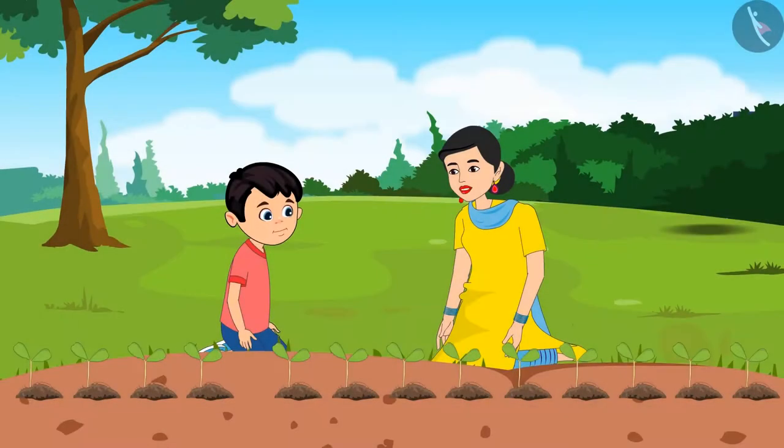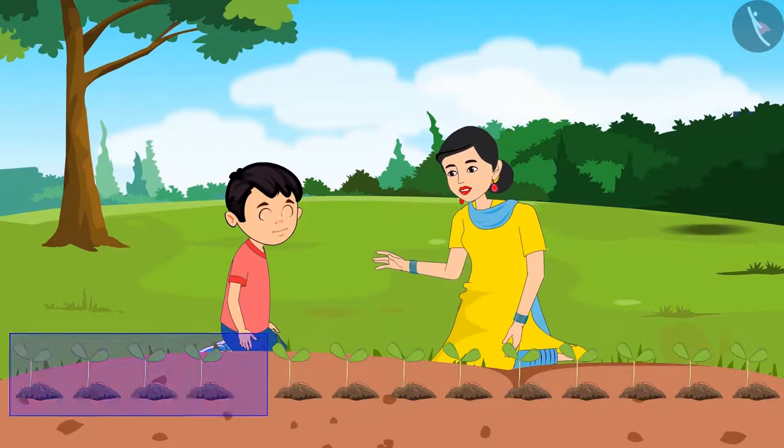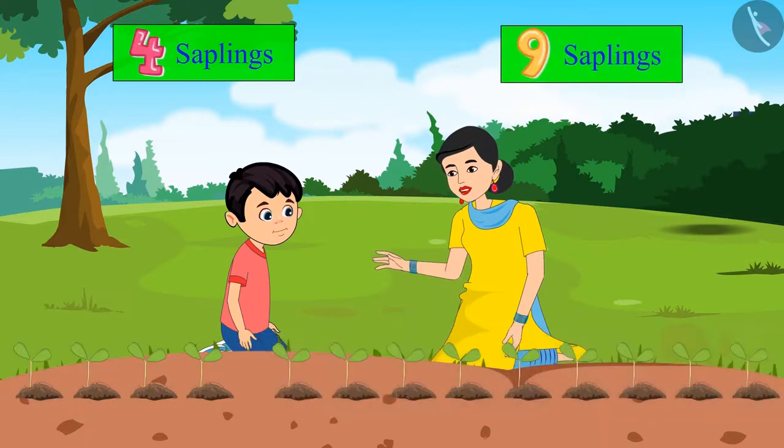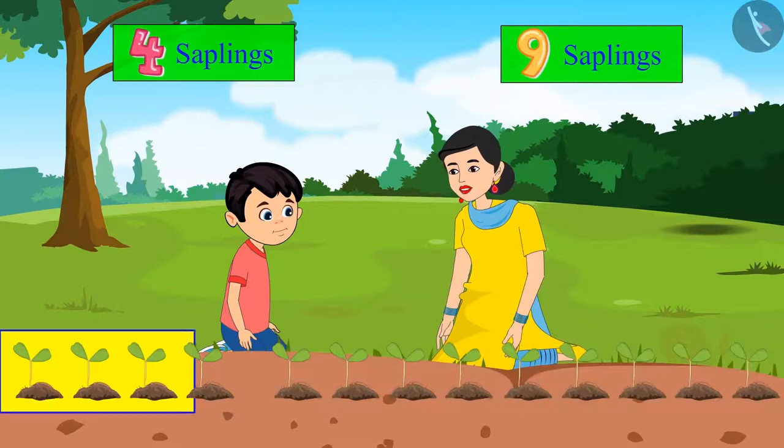No Chotu, not like this. Come on, now let us count the saplings all over again. Look, first of all you planted four saplings. After that I planted nine more saplings. We already had four, and after four